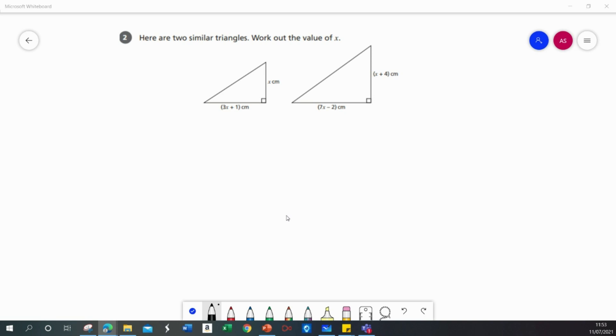Now in similar triangles the corresponding angles are identical and the lengths of the corresponding sides are in the same ratio. So I can use that to help me form an equation.